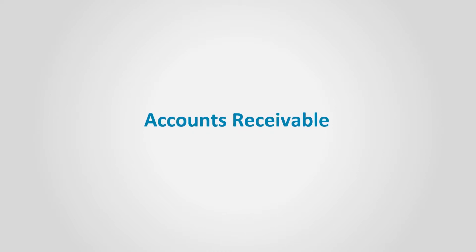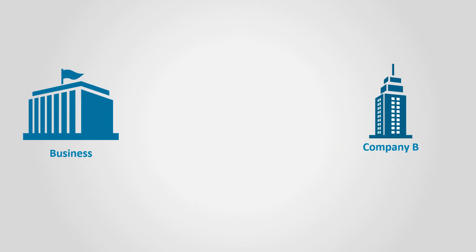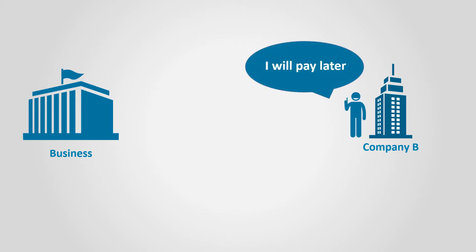Accounts receivables. A business sells goods or services on account to another company, let's say company B. Company B owes the business the dollar amount of such sales. So the business owns the right to get such money, and hence we call it account receivable, which is part of assets.